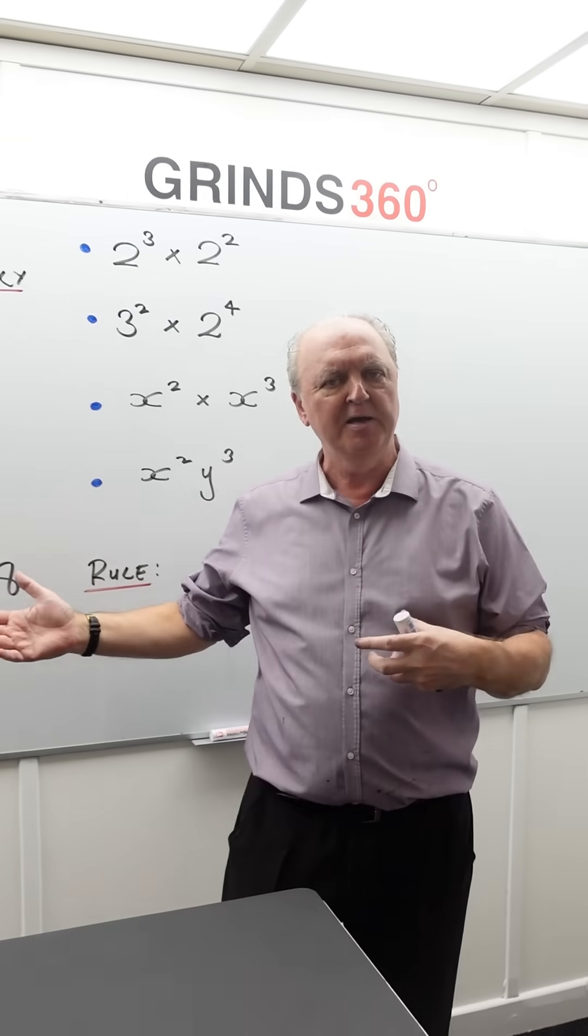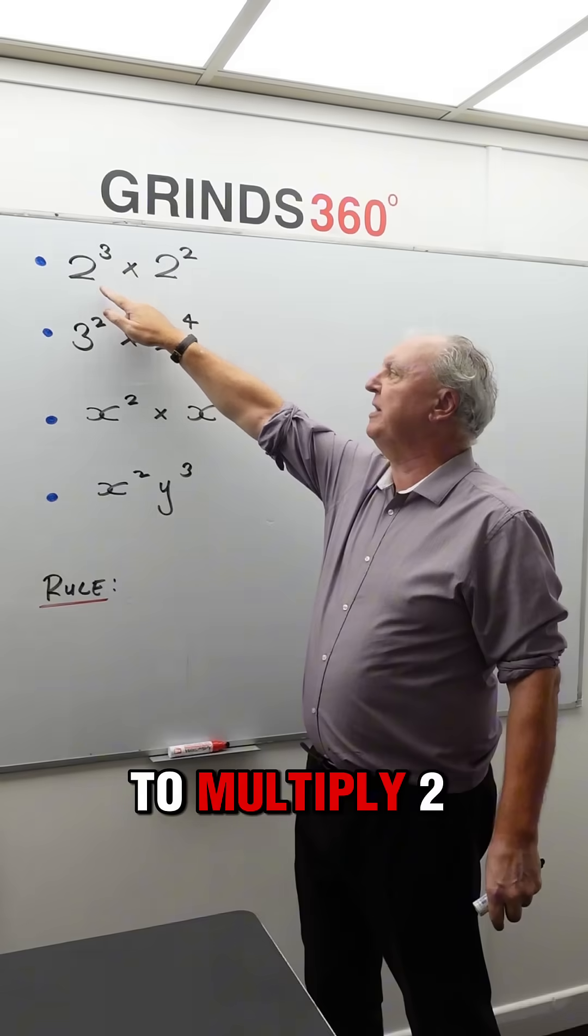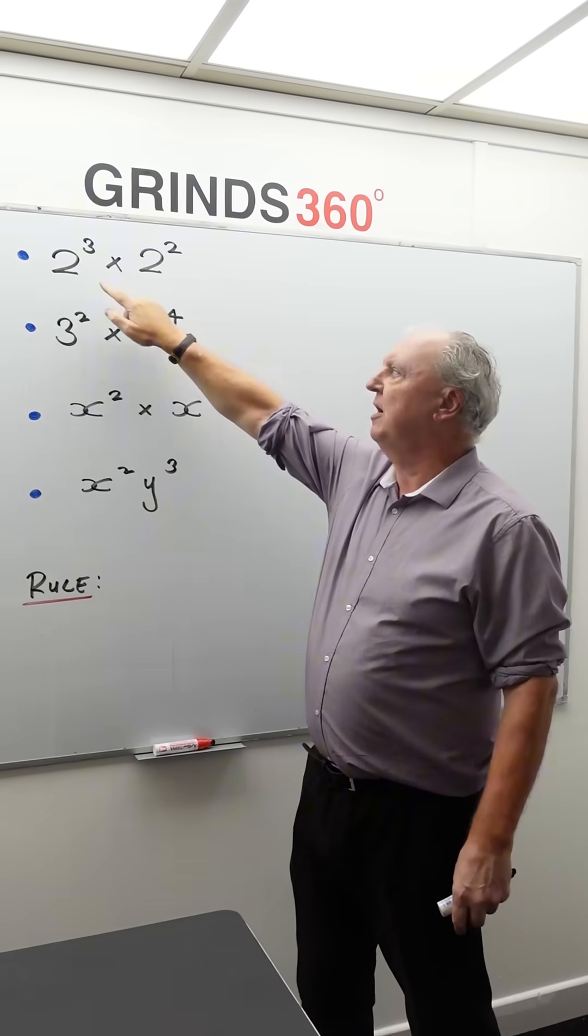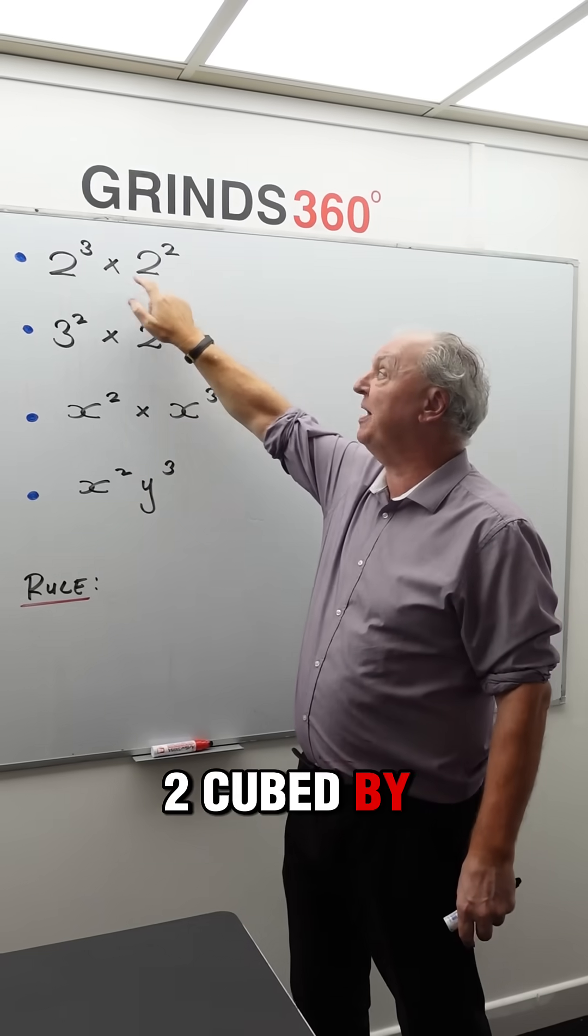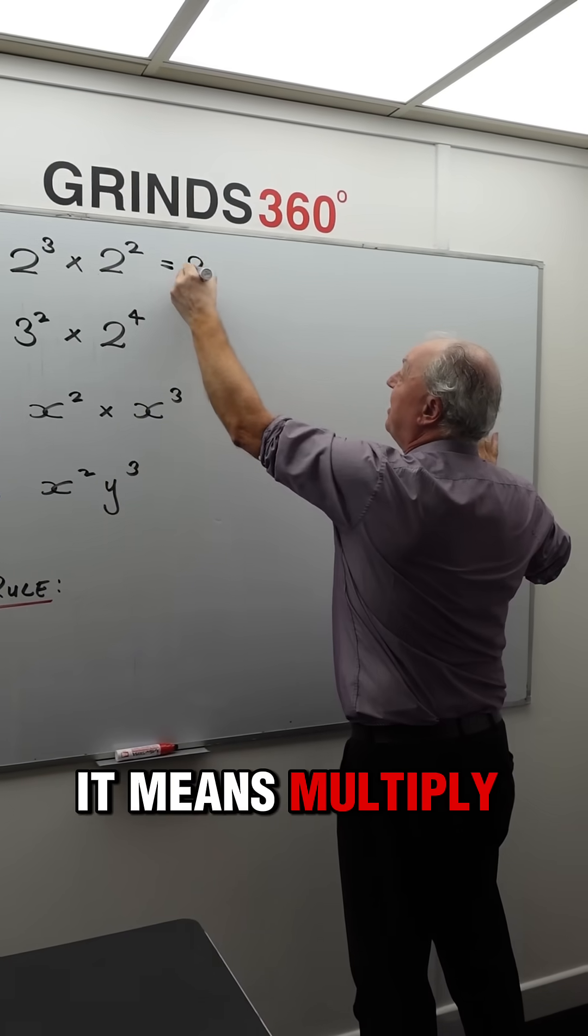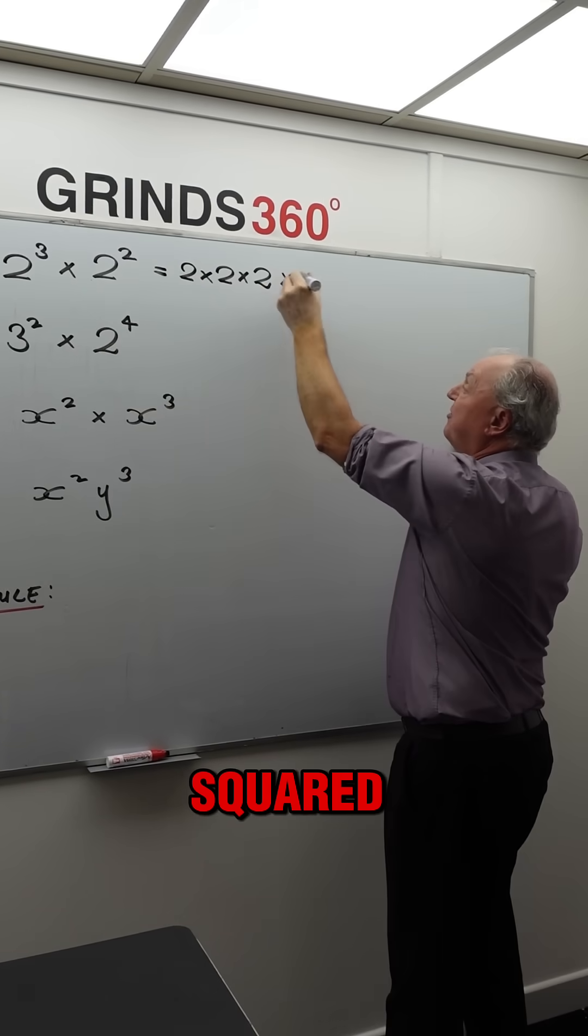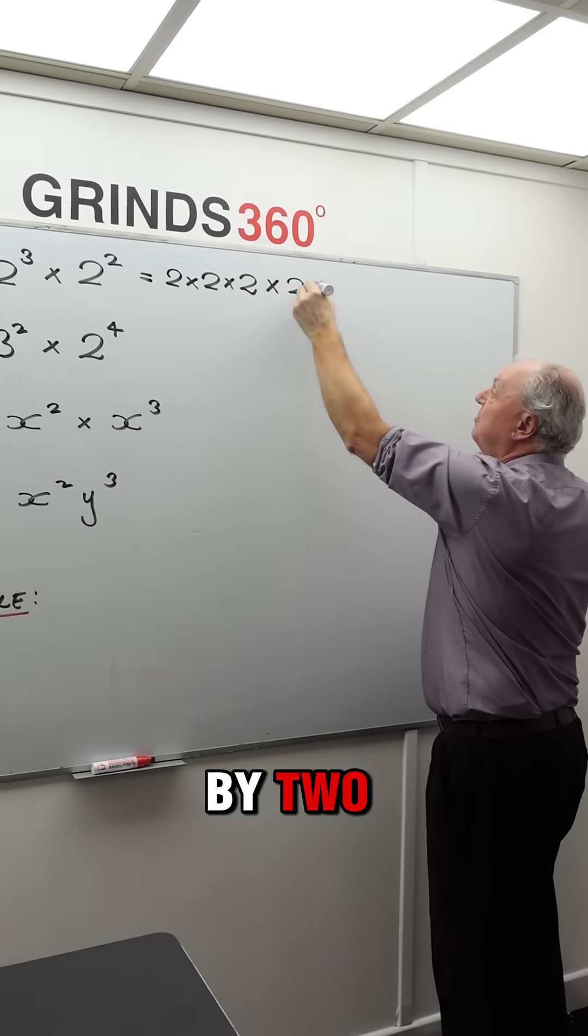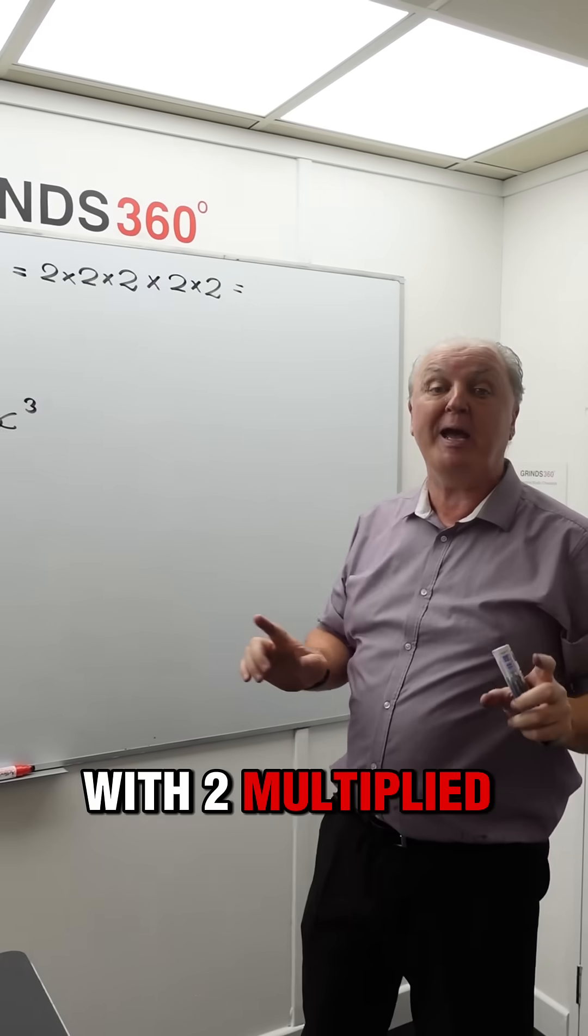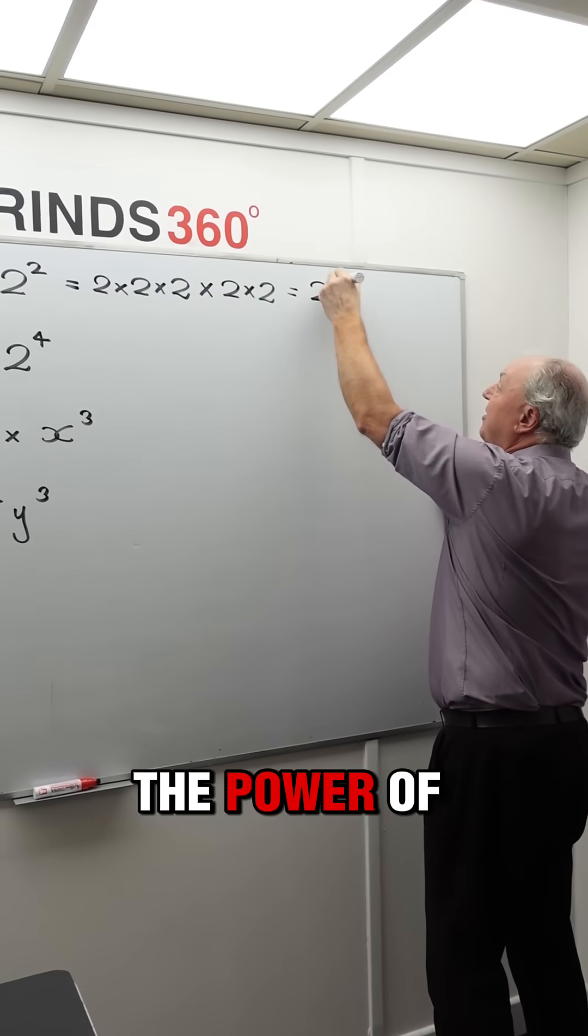The name of this lesson is we're adding powers to multiply. That kind of sounds a bit weird—you're adding to multiply, but you'll see what I mean. For example, if I'm going to multiply 2 to the power of 3 by 2 to the power of 2, or 2 cubed by 2 squared, what does 2 to the power of 3 mean? It means multiply 2 by itself three times, and then multiply that by 2 squared, which means 2 by 2. You end up with 2 multiplied by itself five times—2 to the power of 5.